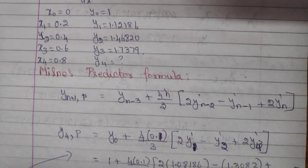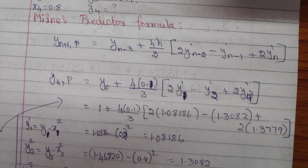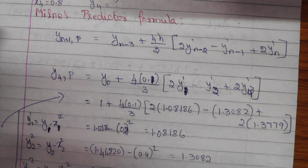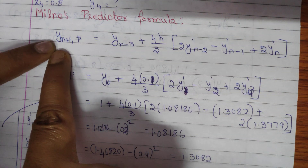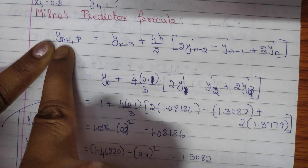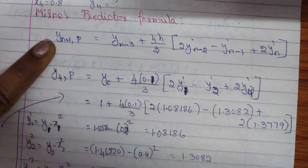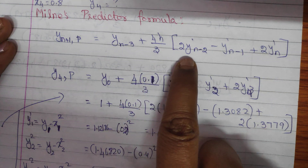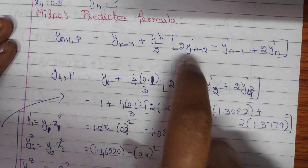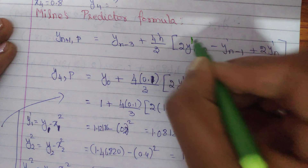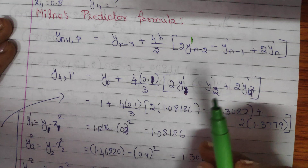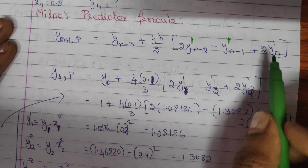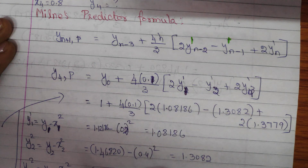We are going to use Milne's Predictor formula and Milne's Corrector formula. The Predictor formula is: y subscript (n+1, p) equal to y(n-3) plus (4h/3) into [2y'(n-2) minus y'(n-1) plus 2y'(n)].